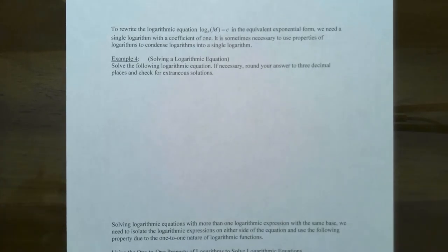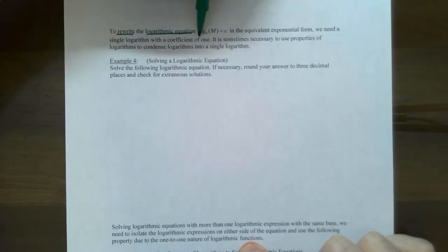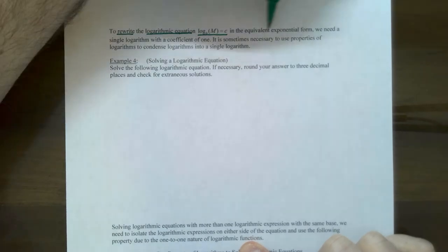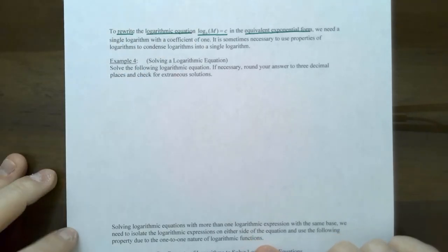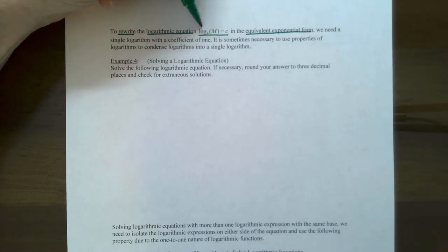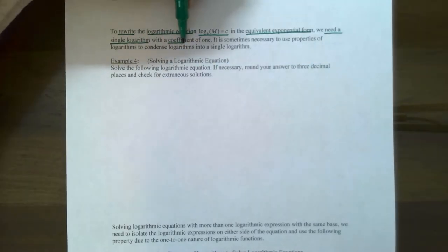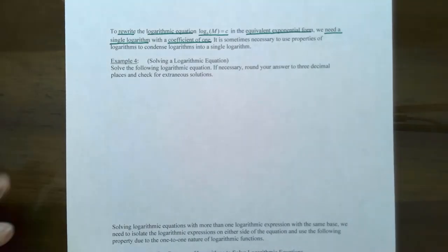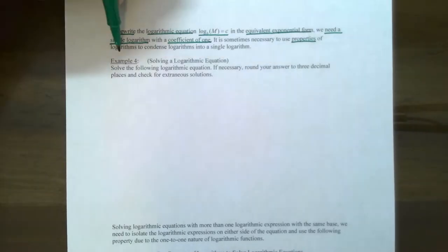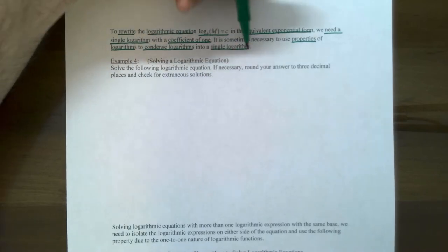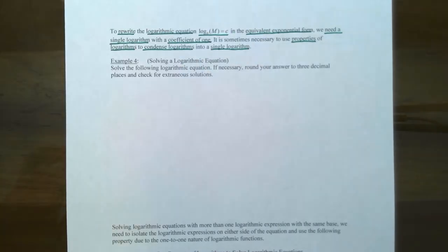Let's talk about other types of logarithmic equations. We just finished equations where we rewrote the logarithmic equation in the form log base b of m equals c into an equivalent exponential form. However, notice that these types of equations require a single logarithm and the coefficient must be 1. Now imagine that you have logarithmic equations where there are two or more logarithms. You can use the properties of logarithms to condense them into a single logarithm before converting from logarithmic form to an equivalent exponential form. Let's try example four.